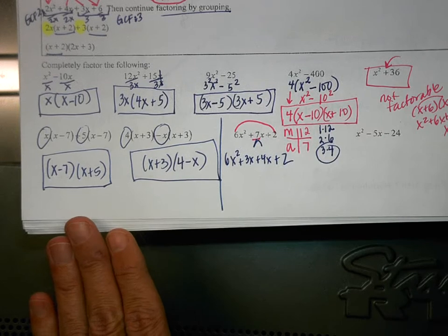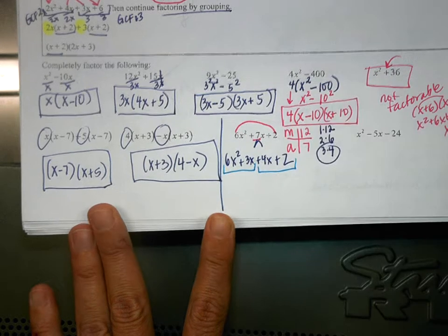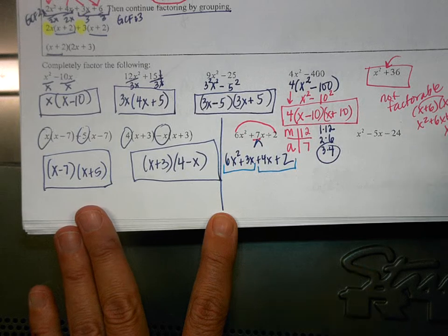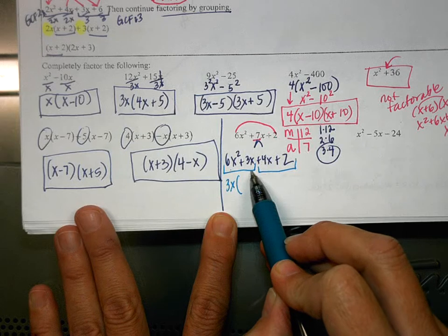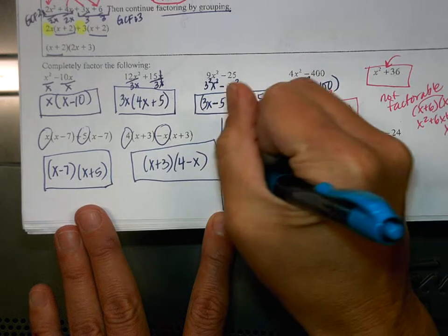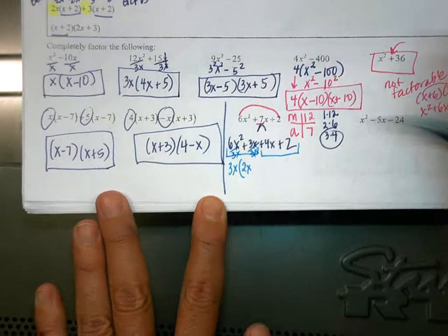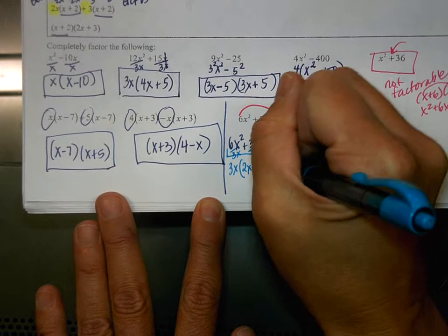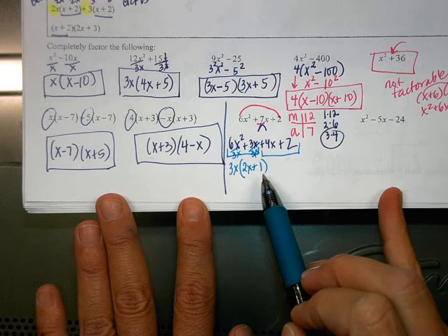Now that you have four terms, we factor by grouping. We're going to split this into two different groups. In the first group, what is my GCF? 3x. If you want to divide each of these by 3x, you can — that's what we're doing. So when I divide this by 3x, what am I left with? 2x. And then when I divide 3x by 3x, I'm left with plus 1. Remember that if I were to distribute this, it would need to come back to this, so you have to have the plus 1.